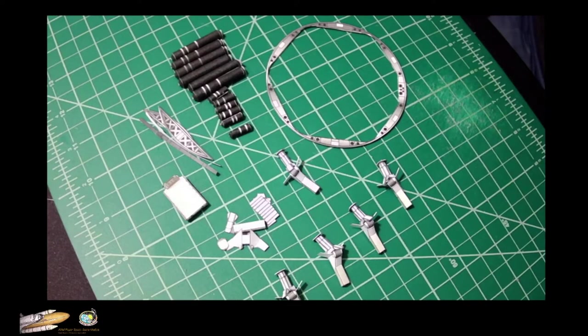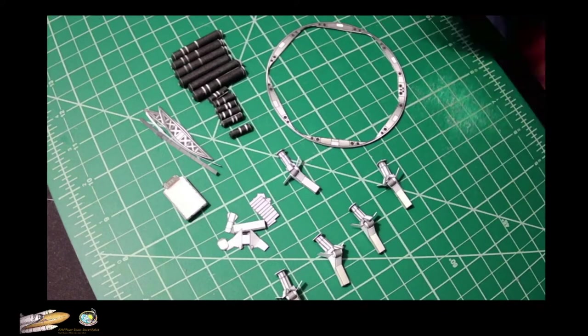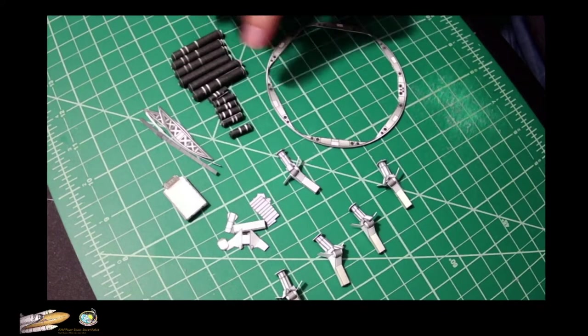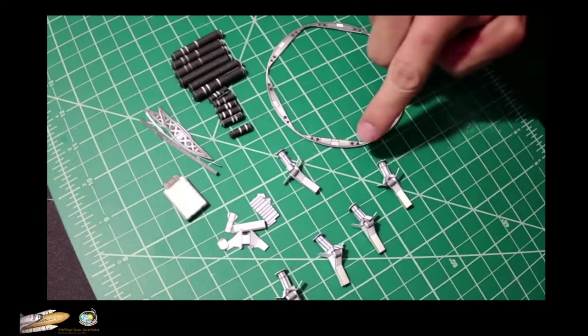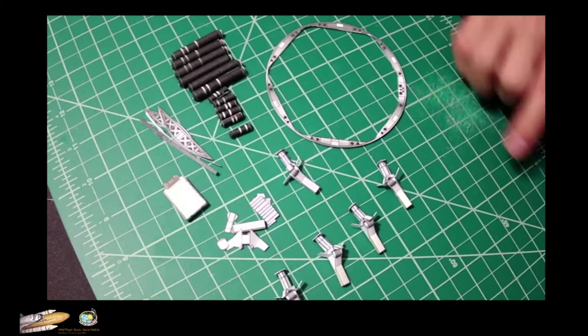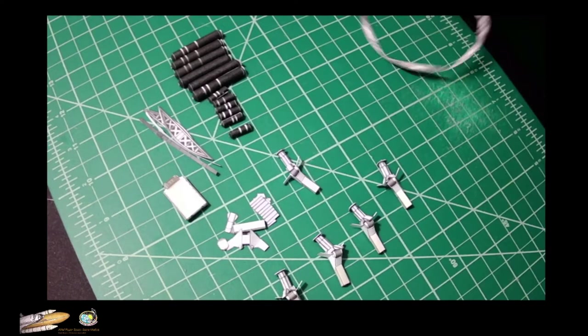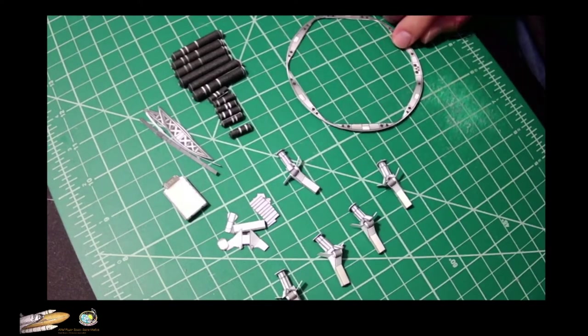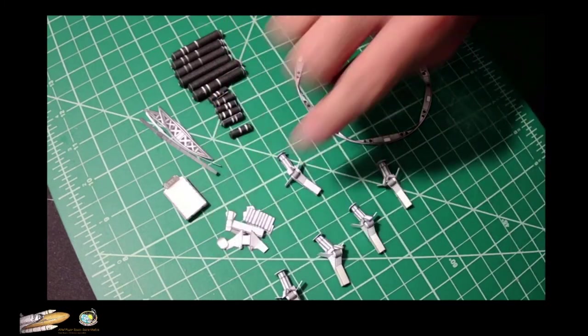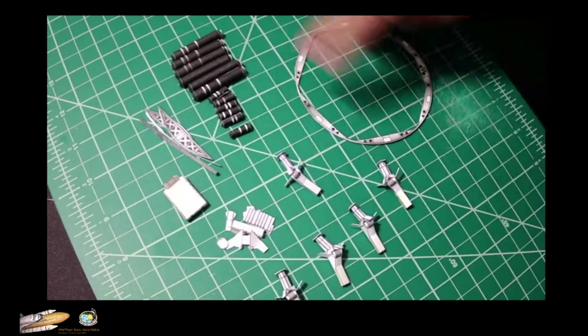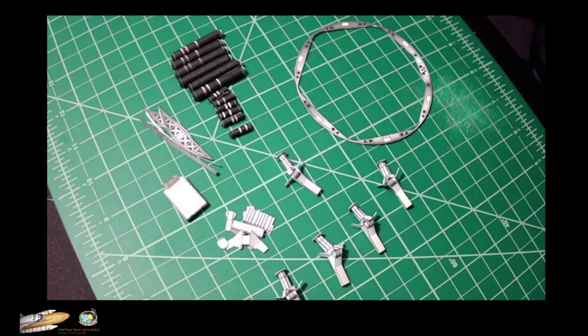And here are all the parts that make the engine section of the Starship SN8. So I have built most of the elements, in this case here all the COPVs and all the legs. The ring, the base ring for the legs is ready. And I have these small parts, so I can show you how to build each one of these pieces.